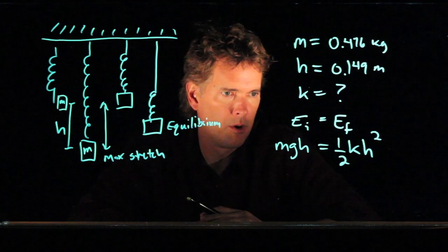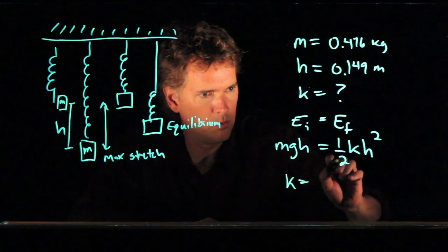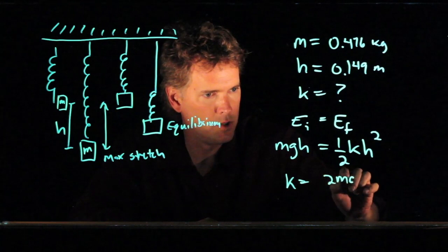And now look at this. We can solve this last equation for k. What do we get? We get k equals, we multiply across by 2, and we get 2mg.